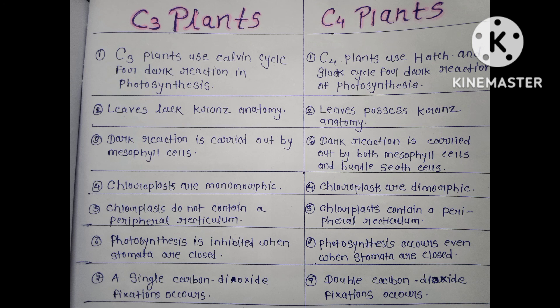In C3 plants, photosynthesis is inhibited when stomata are closed, whereas in C4 plants, photosynthesis occurs even when stomata are closed.